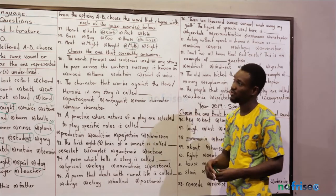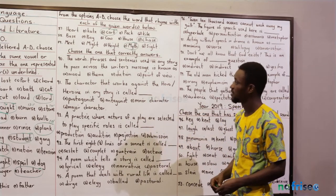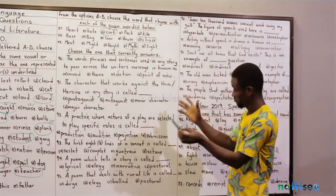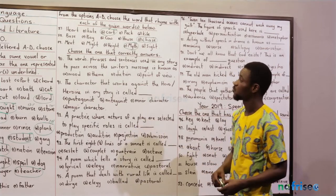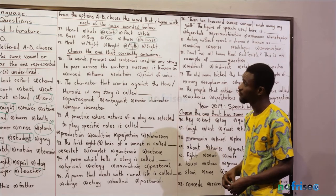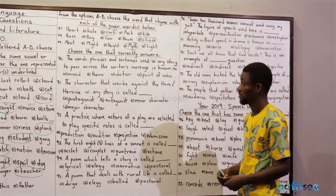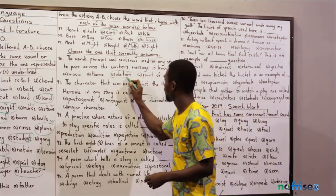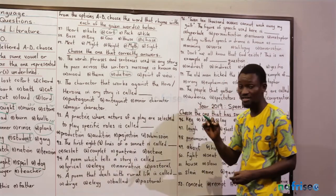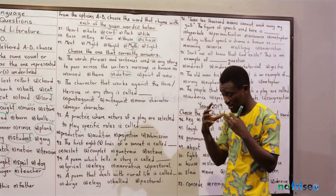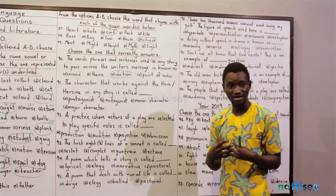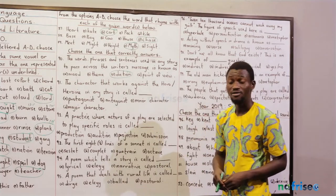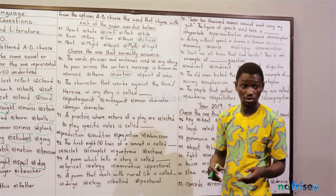We are done with the speech work for year 2020. Now we're going to the literature part. Question 90: the words, phrases, and sentences used in any story to pass across the writer's message is known as what? Is it mood, theme, diction, or point of view? The answer is diction — the choice of words and phrases the writer makes. Mood is the feelings of the writer before writing. Theme is the central message. Point of view is the angle at which the writer writes the story — maybe first person or third person narrative.